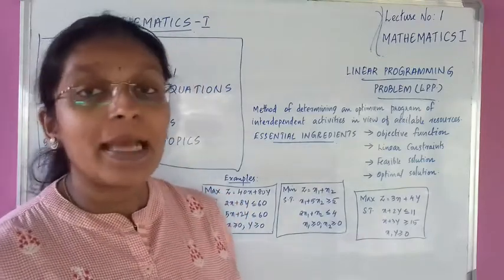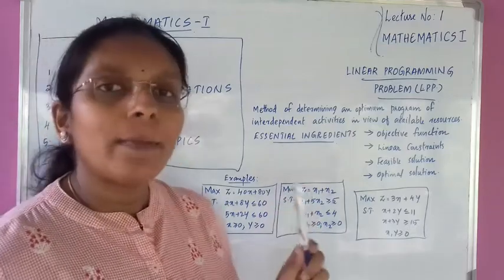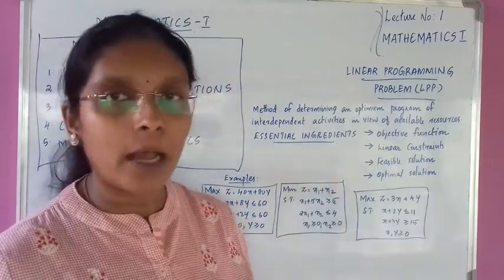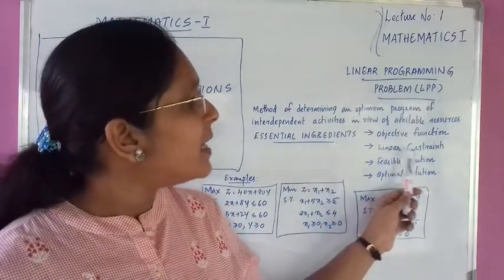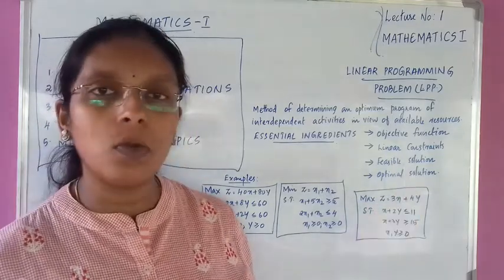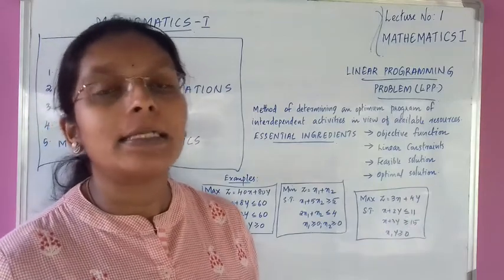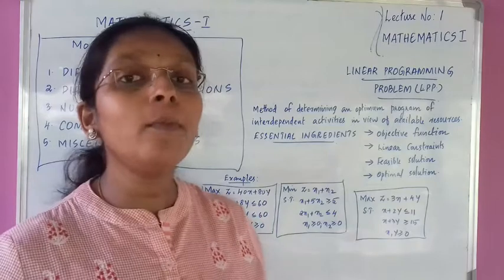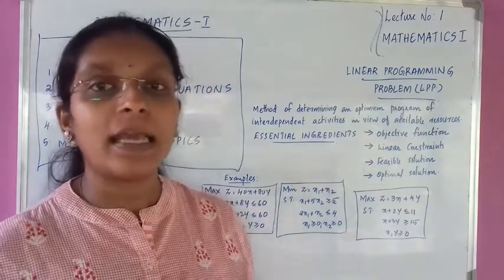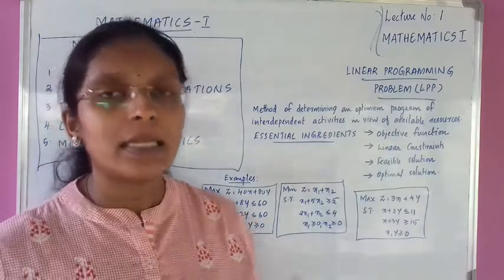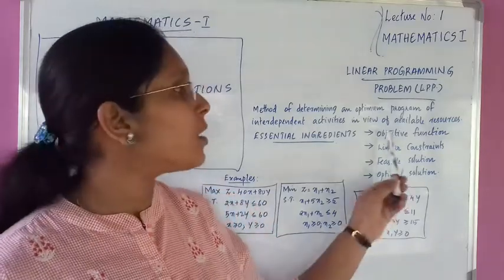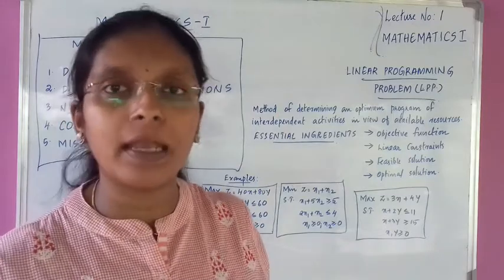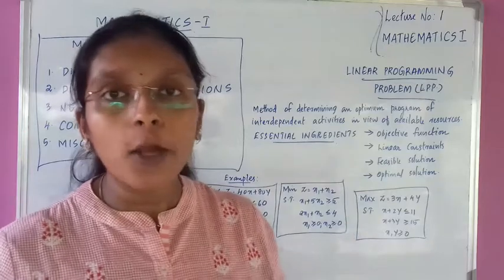Linear Programming Problems have essential ingredients. The problem has four main ingredients. The first one is objective function. The second one is linear constraints. The third one is feasible solution. And the fourth one is optimal solution. The objective function relates to maximizing profit or minimizing loss.